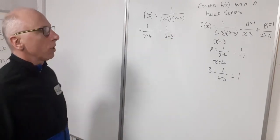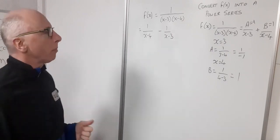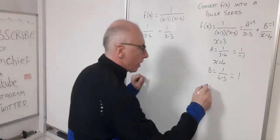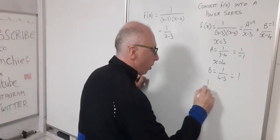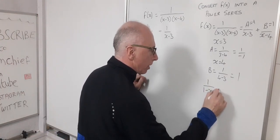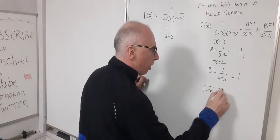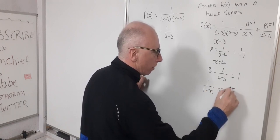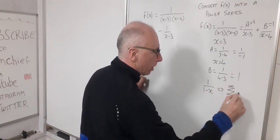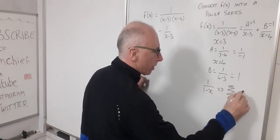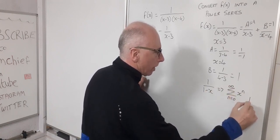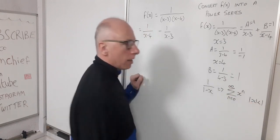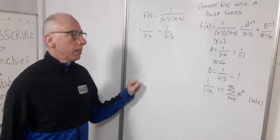We're going to use our favorite power series: 1 / (1-x) as a power series equals the summation from n=0 to infinity of x^n. And that's valid for |x| < 1. We want to get either of these functions into this kind of format.